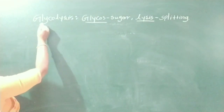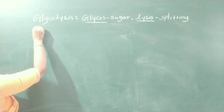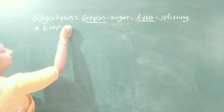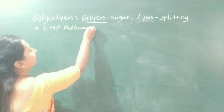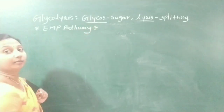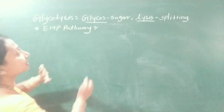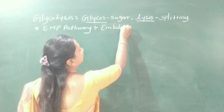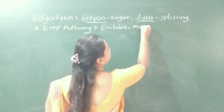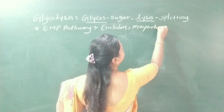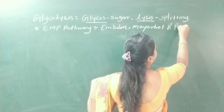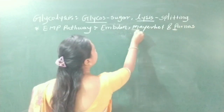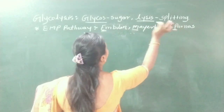Glycolysis is also known as the EMP pathway, because this pathway was discovered by scientists Embden, Meyerhof, and Parnas. So it is known as the EMP pathway.